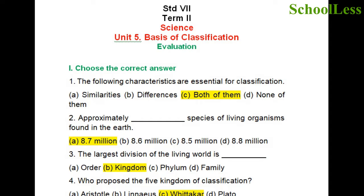Question 3: The largest division of the living world is A. Order, B. Kingdom, C. Phylum, D. Family. Kingdom is the largest division of the living world. Because after kingdom it is the phylum, then the order, then the family, and after family both genus and species come. That is what we have seen in the lesson.